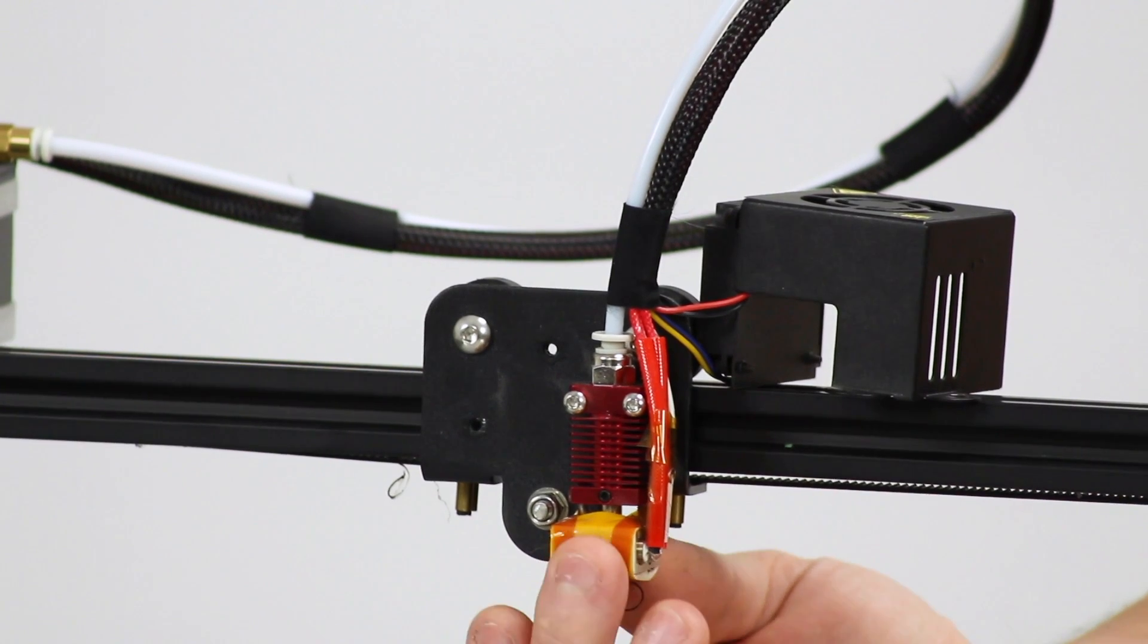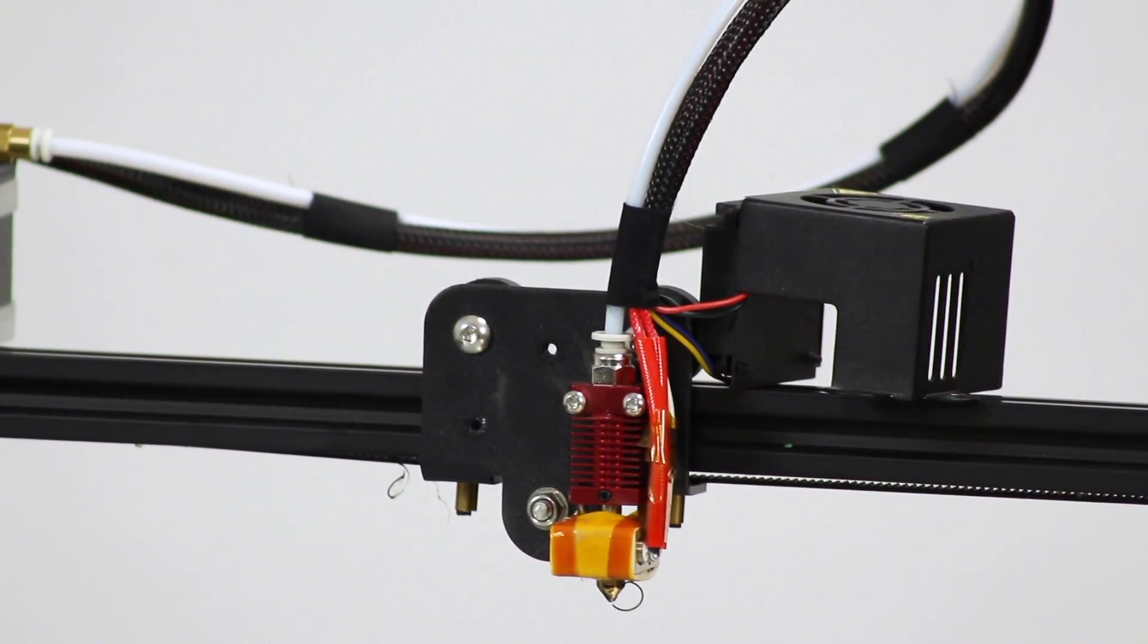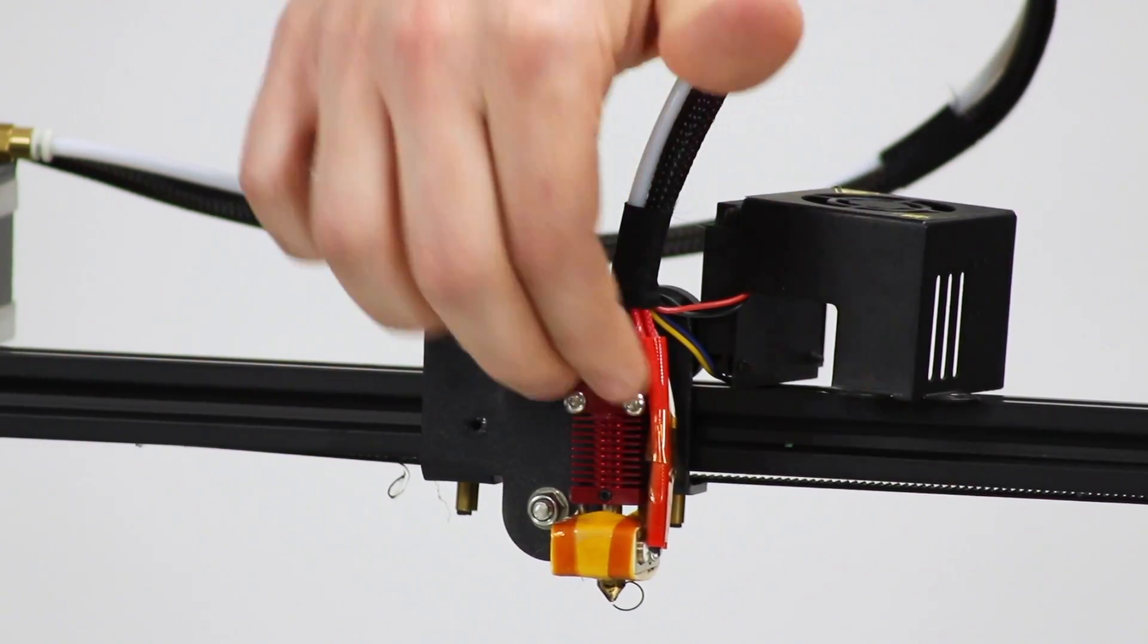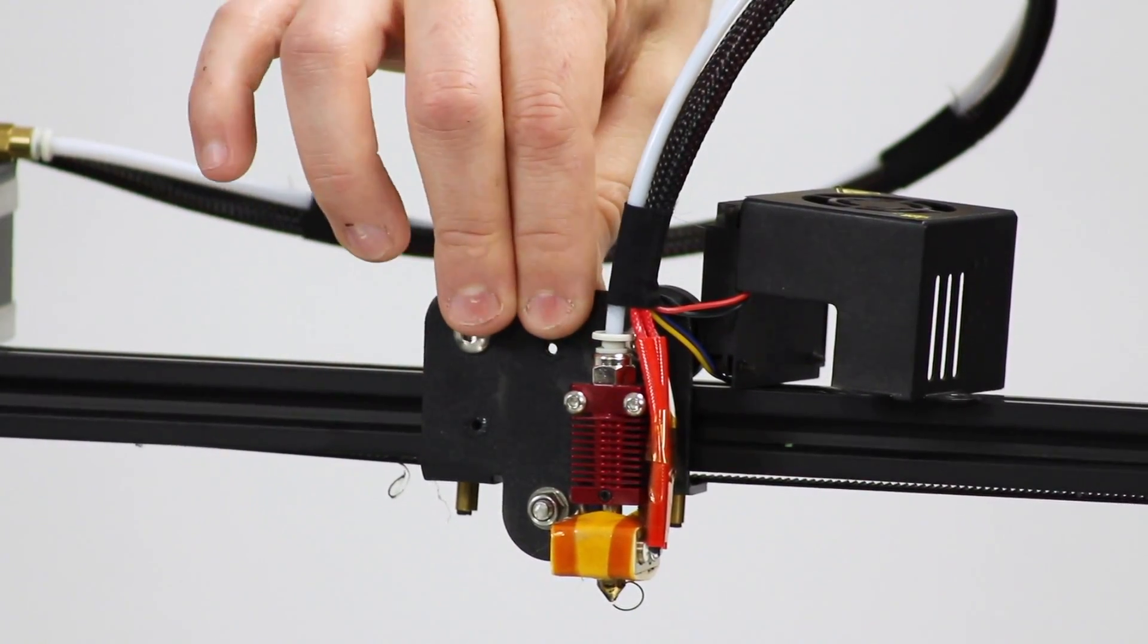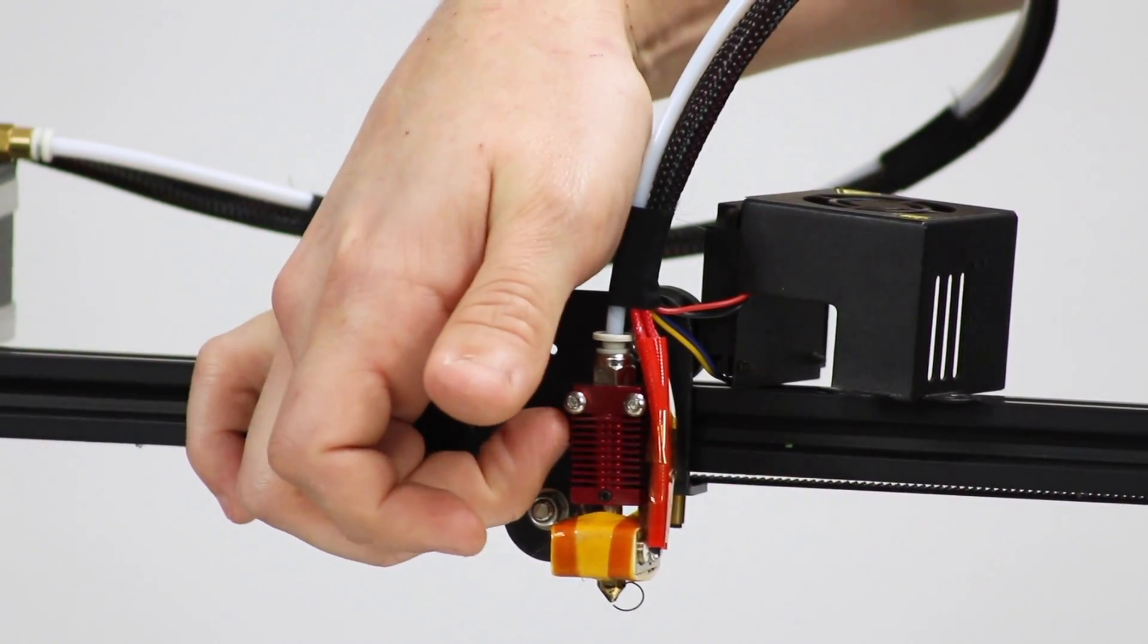And you've got the Kapton tape holding on like a cotton thermal insulation pad there. And two bolts running straight through the heat sink and mounting it onto this X carriage here.